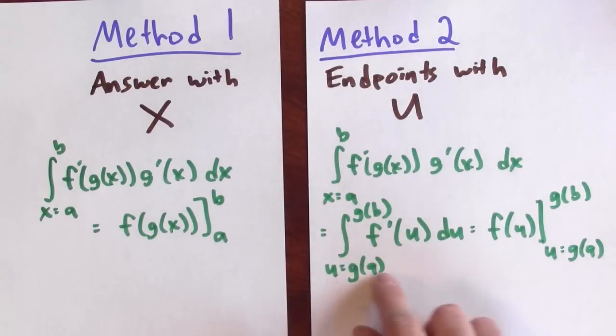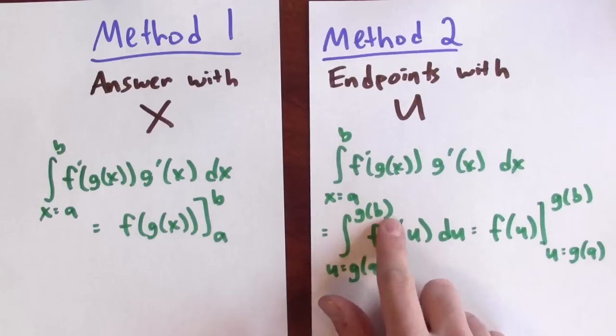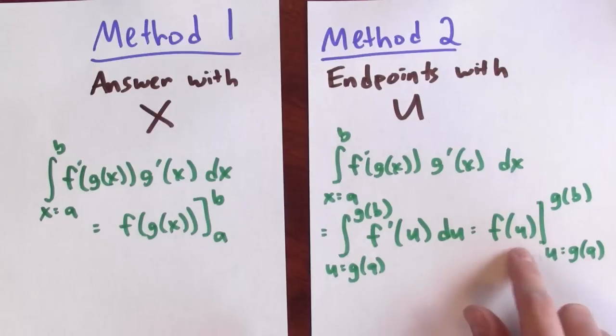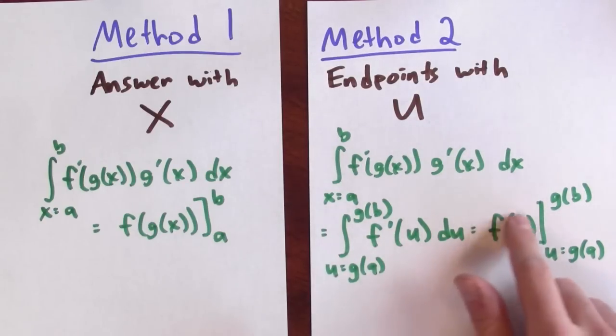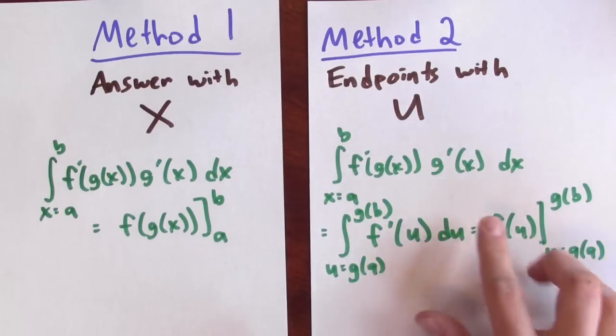then I rewrote the endpoints to go from g of a to g of b in terms of u. And then I found an antiderivative of f prime u du, now f of u, and I evaluated that at g of b and g of a and took the difference.